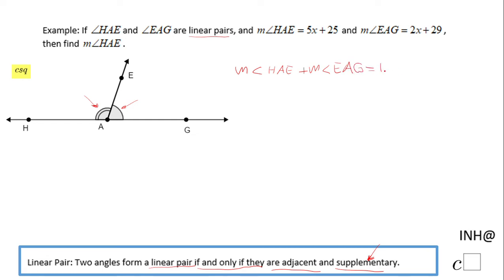Okay, and now we're gonna replace these angles with the given expressions. The first one, angle HAE, is 5x + 25. The measure of angle EAG is 2x + 29.